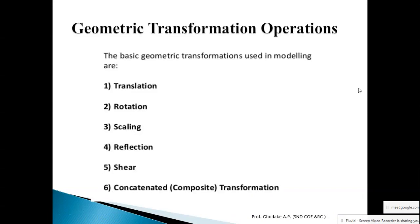First is translation. With the help of translation we can move the geometry along the x-axis and along the y-axis by a translation distance Tx and Ty. Second is rotation — if you want to rotate the geometry in clockwise or anticlockwise direction in the coordinate system, that transformation is called rotation. Third is scaling. If you want to enlarge or reduce the size of the geometry, then scaling transformation is used.